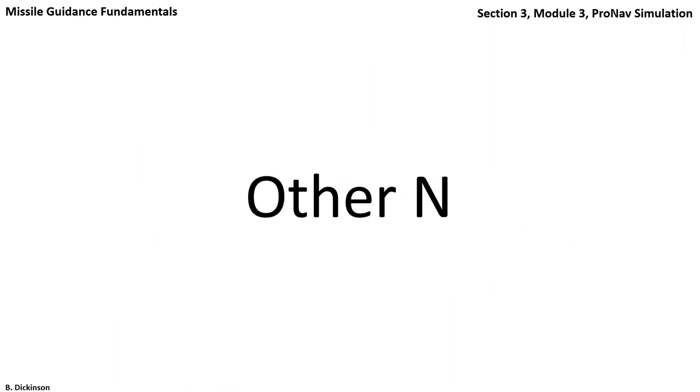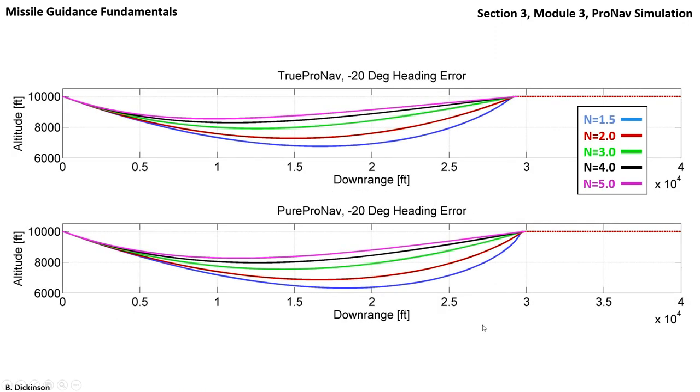Let's explore the ProNav law for various values of the navigation gain. Here are the trajectories for true ProNav on top and pure ProNav on bottom for 20 degrees heading error for five different values of the navigation gain.